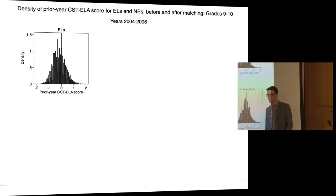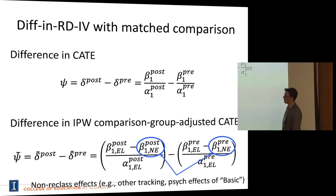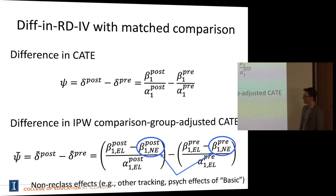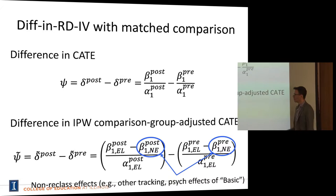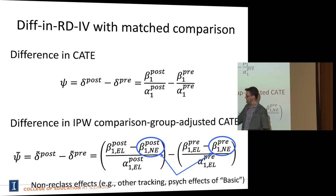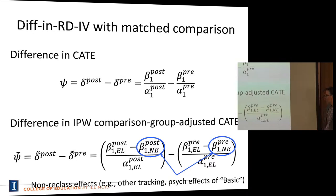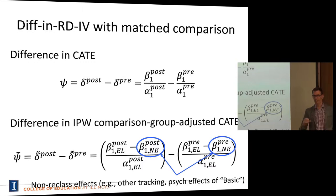This gives us the difference in inverse-probability-weight comparison-group-adjusted complier average treatment effects. We take the EL students' intent-to-treat effect in the post-2007 period, subtract off the never-EL students' ITT in the post period, and scale up by the compliers in that period — anything remaining is attributable to reclassification. We do the same in the pre-period and subtract. These point estimates are intended to remove any non-reclassification effects at the threshold, such as tracking or psychological labeling effects.